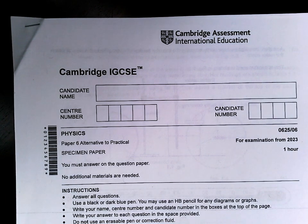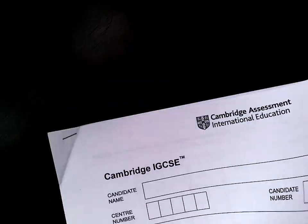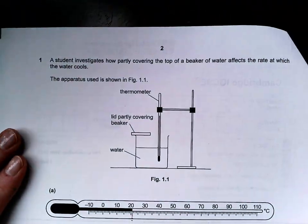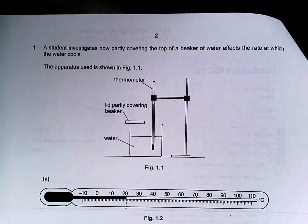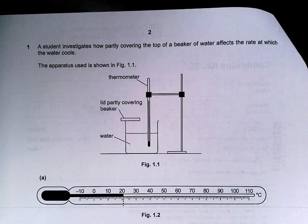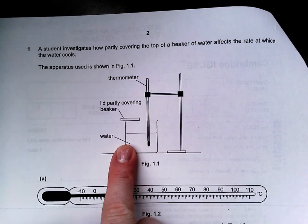Hi Year 11, let's have a look at your Paper 6. So this is your Alternative to Practical. In Question 1, a student is asked to investigate how partly covering the top of a beaker of water affects the rate at which the water cools.